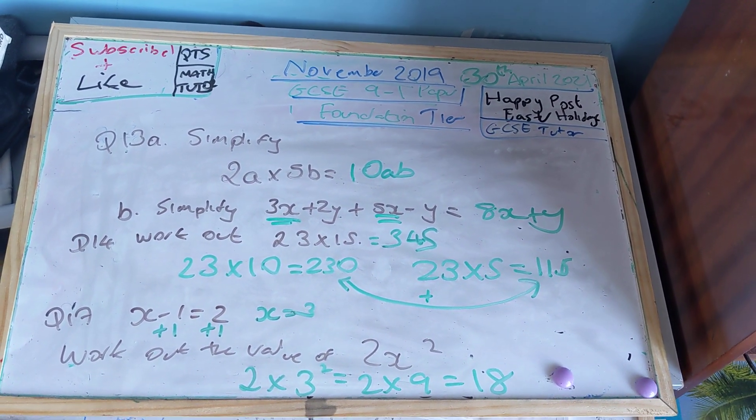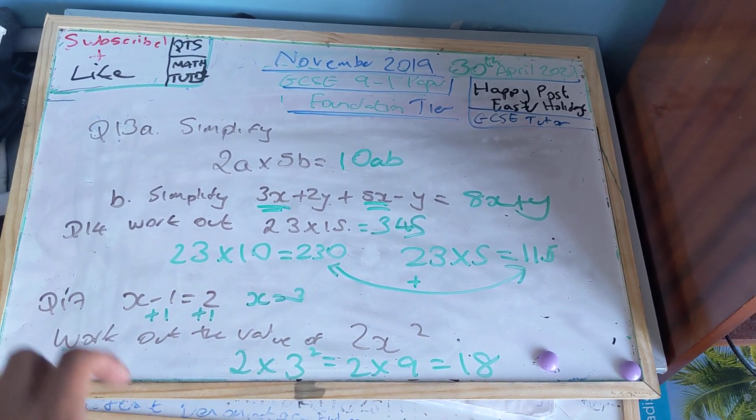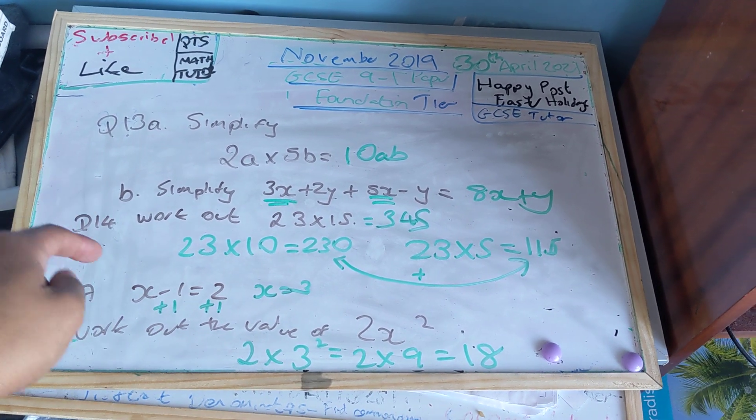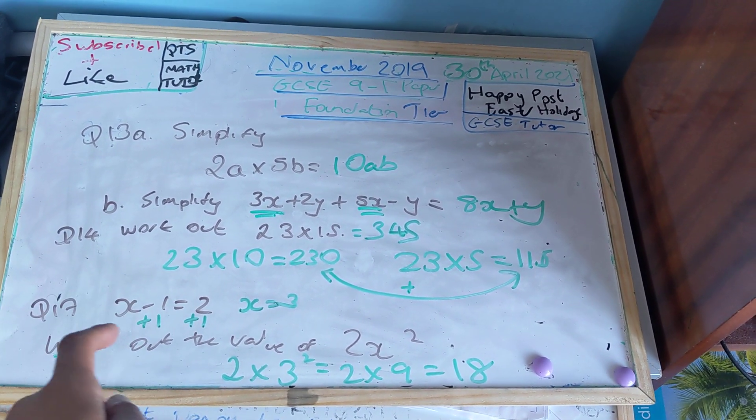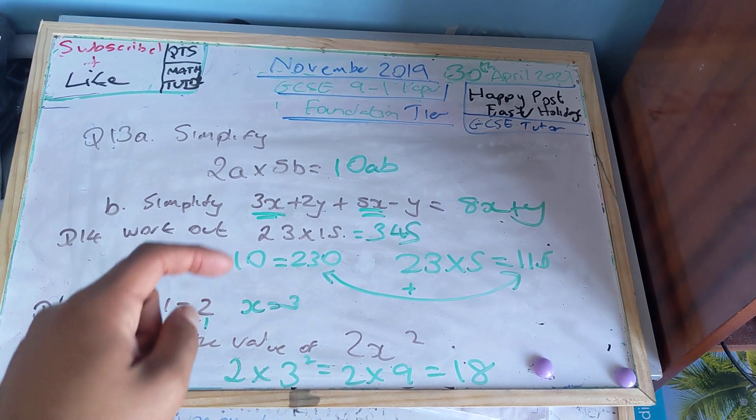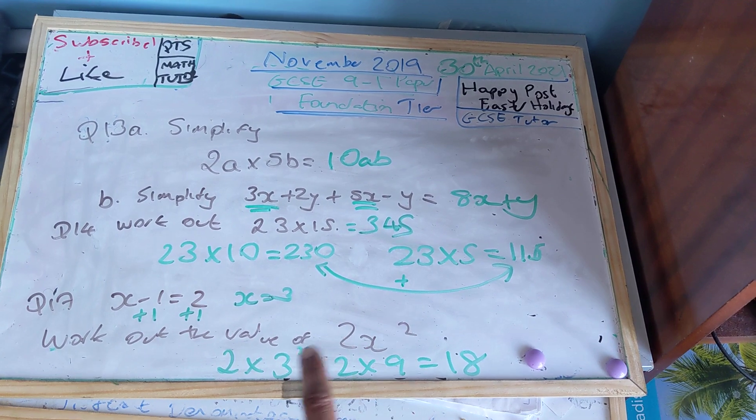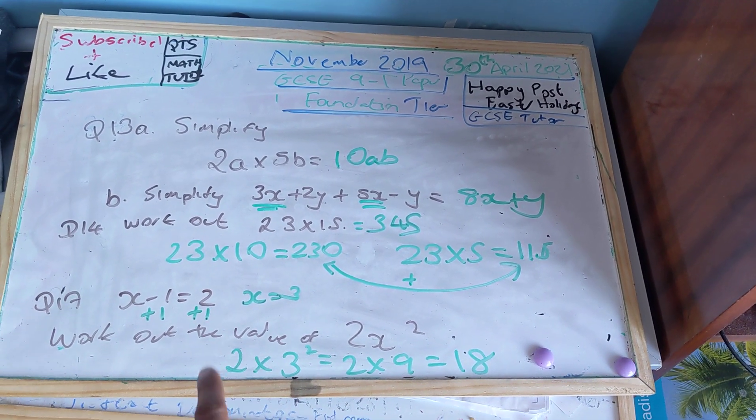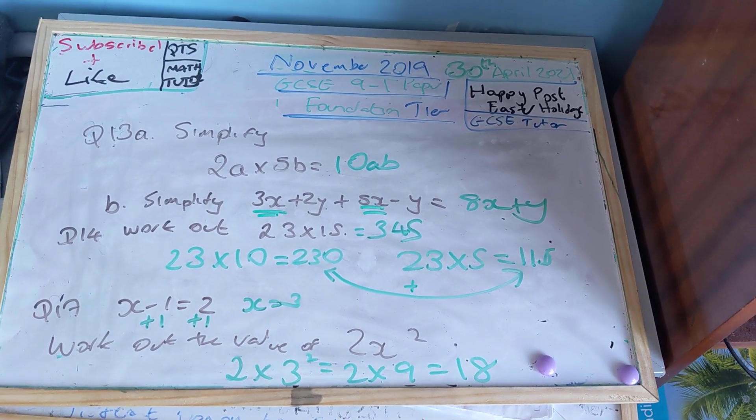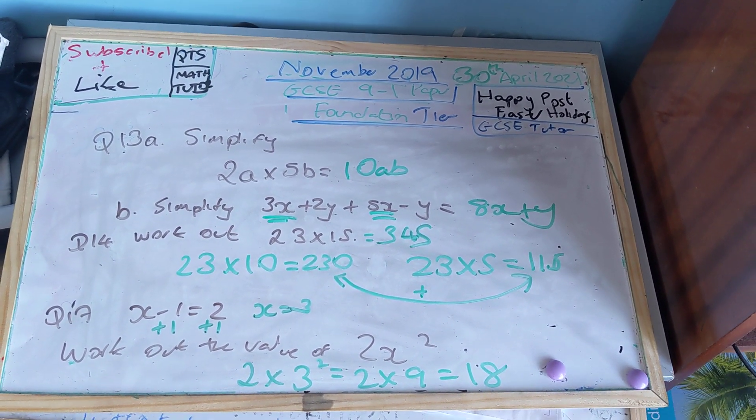Question number 17A says X minus 1 equals 2. It says work out the value of 2X squared. So firstly, we've got to solve this equation. The opposite of minus 1 is to add on to both sides. So X equals 2 plus 1, which is 3. So X equals 3. Subbing in X equals 3 into here, 2 times 3 squared. 3 squared is 9. 2 times 9 is 18. So my answer for question 17 is 18.